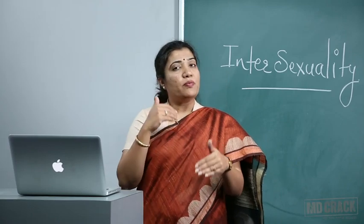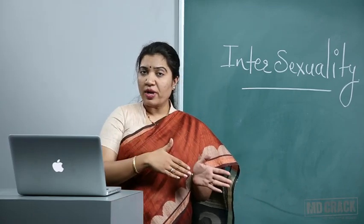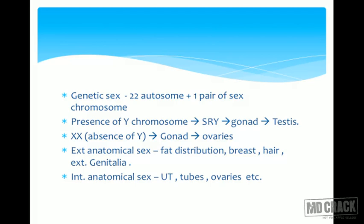When Y is present, gonads become testes; when Y is absent, gonads become ovaries. External anatomical sex includes fat distribution, breast development, pubic and axillary hair, and external genitalia. Internal sex includes the presence of uterus, fallopian tubes, and ovaries.